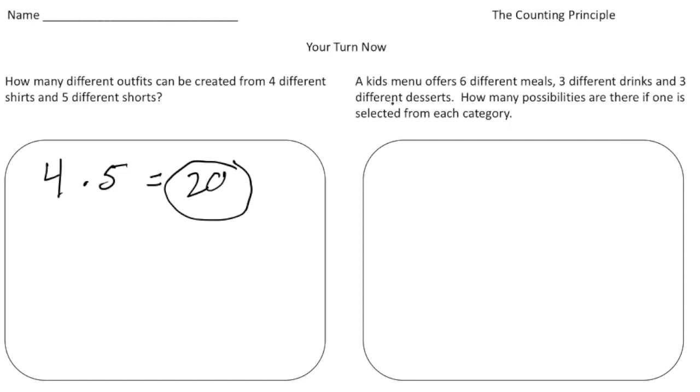All right, the second one says, a kids menu offers six different meals, three different drinks, and three different desserts. How many possibilities are there if one is selected from each category? So again, this time we have three different categories, right? So we're going to multiply six times three times three.